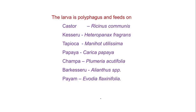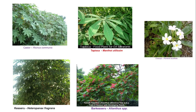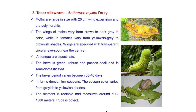This is the eri silkworm moth adult. The eri silkworm is polyphagous and feeds on castor, tapioca, champa, keseru, and other plants.